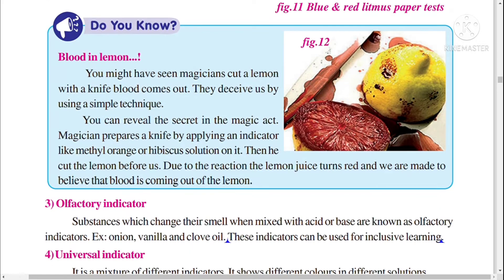Do you know how magicians make blood appear from a lemon? Magicians prepare a knife by applying an indicator like methyl orange or hibiscus solution on it. After letting it dry, they cut the lemon in front of us. Due to the reaction with lemon juice, the indicator turns red, making us believe blood is coming out of the lemon.